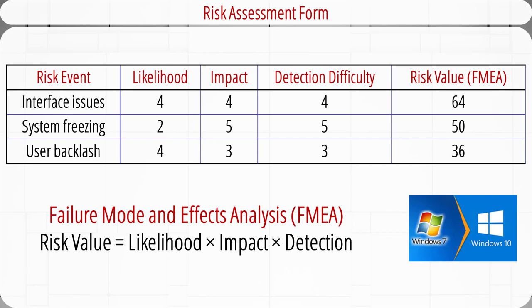A model that can be used to evaluate the risk level of an event is called the Failure Mode and Effects Analysis, or the FMEA model. According to the FMEA model, the risk value is equal to the likelihood times the impact times the detection difficulty. Using this equation, we can calculate the risk values of these three risk events. The first one is 64, the second one is 50, and the third one is 36. Based on these numbers, interface problems have the highest risk, then system freezing, followed by user backlash.